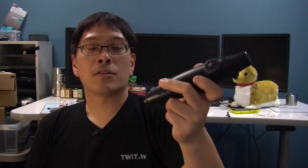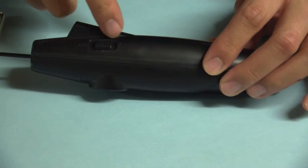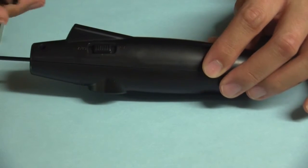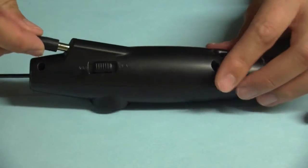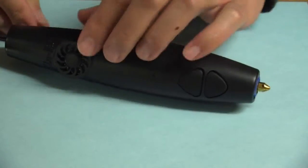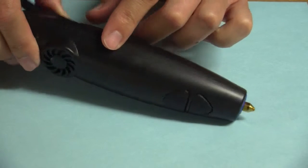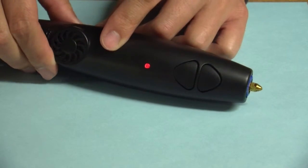And you have two control switches, one for fast extrusion and one for slow extrusion. And as you can see, the device has a built-in fan that also helps cool the plastic as you're pushing it out of the pen.